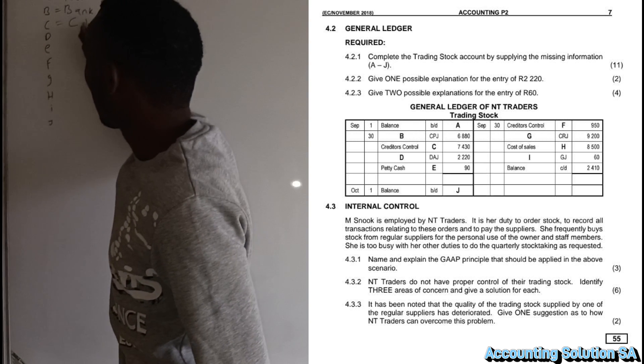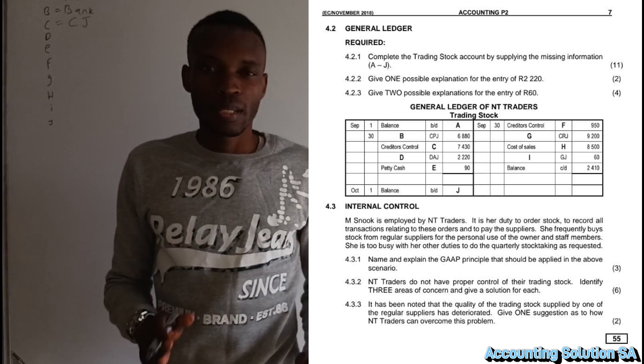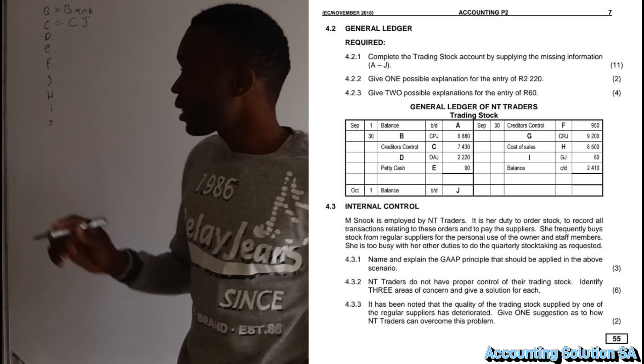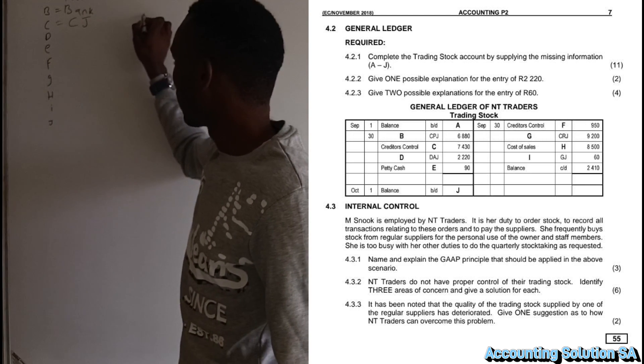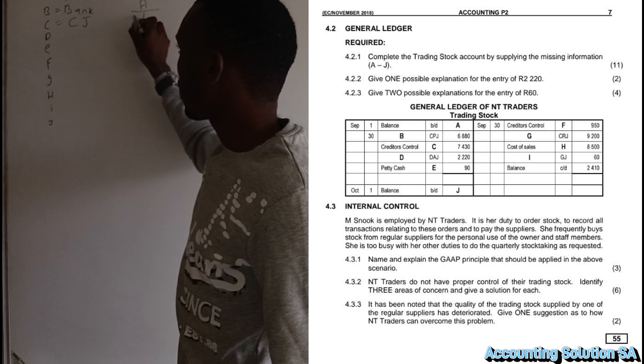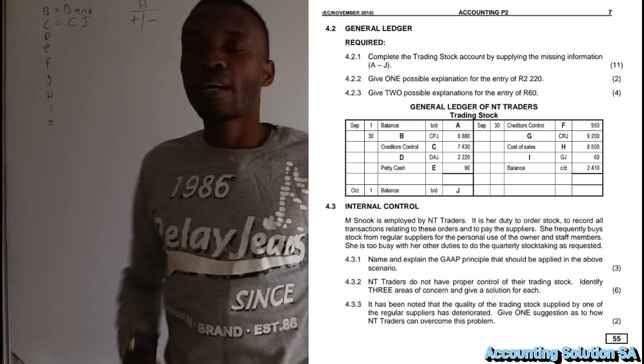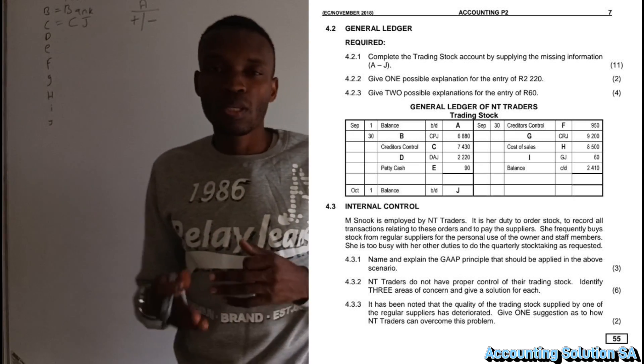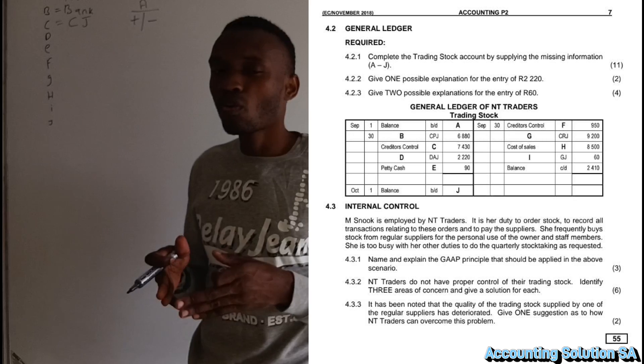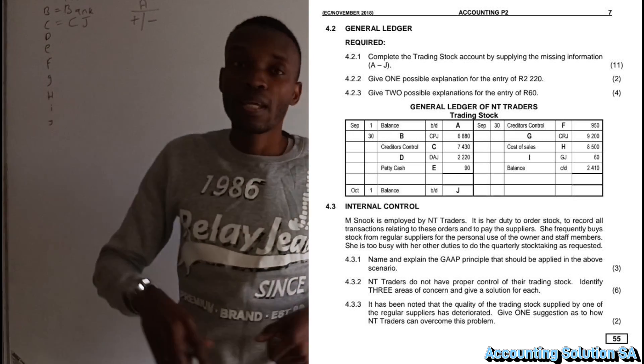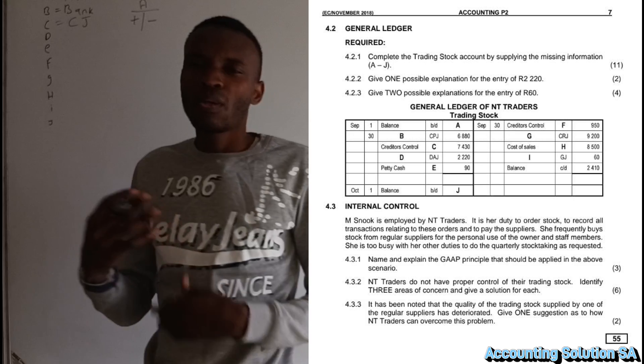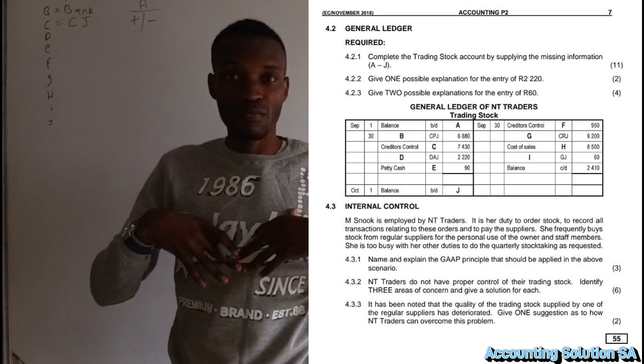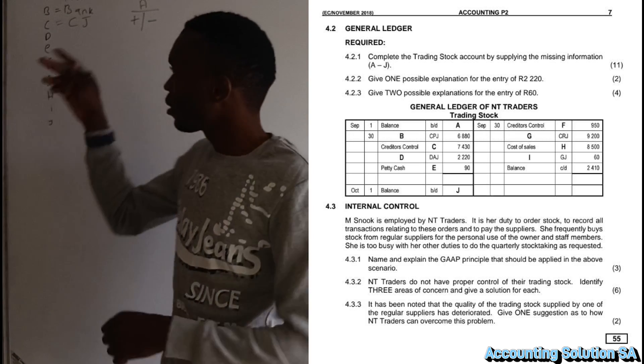Let me remind you this, grade ten: remember when we talk about trading stock, we are talking about an asset. Asset increases on the debit and decreases on the credit, which means that whatever that has been received, the stock that has been received or something that makes stock increase, it comes to this side. If, for example, a client returns inventory, simply means that now we have more inventory because the client returned to us.